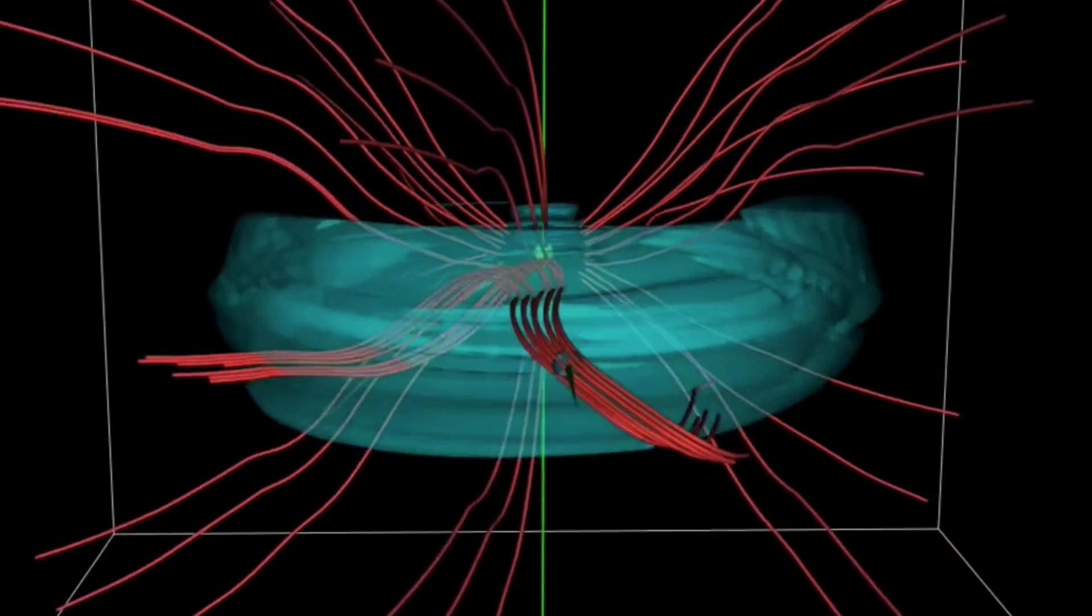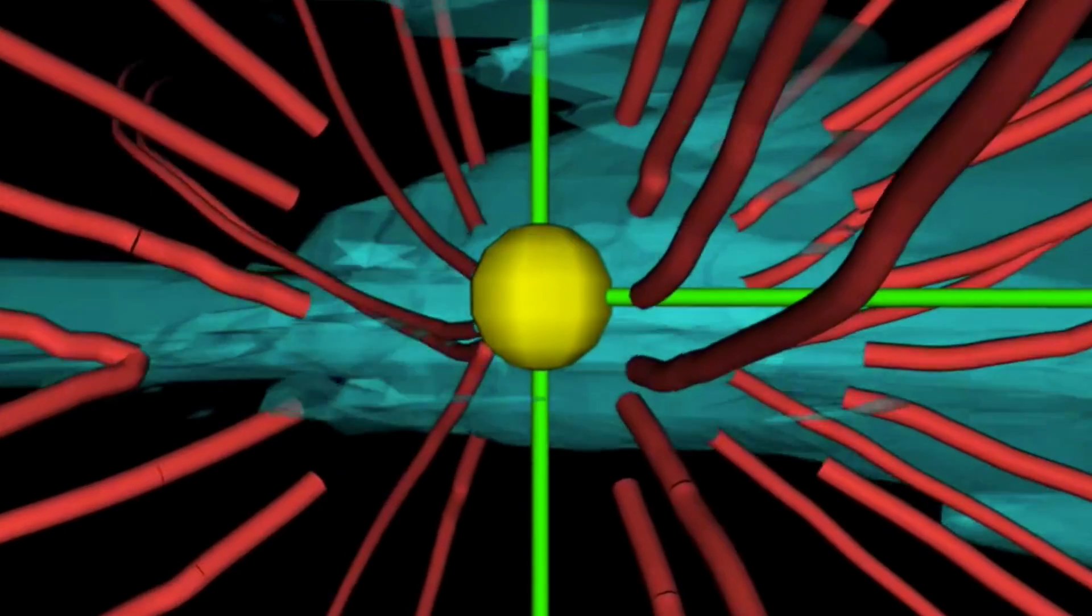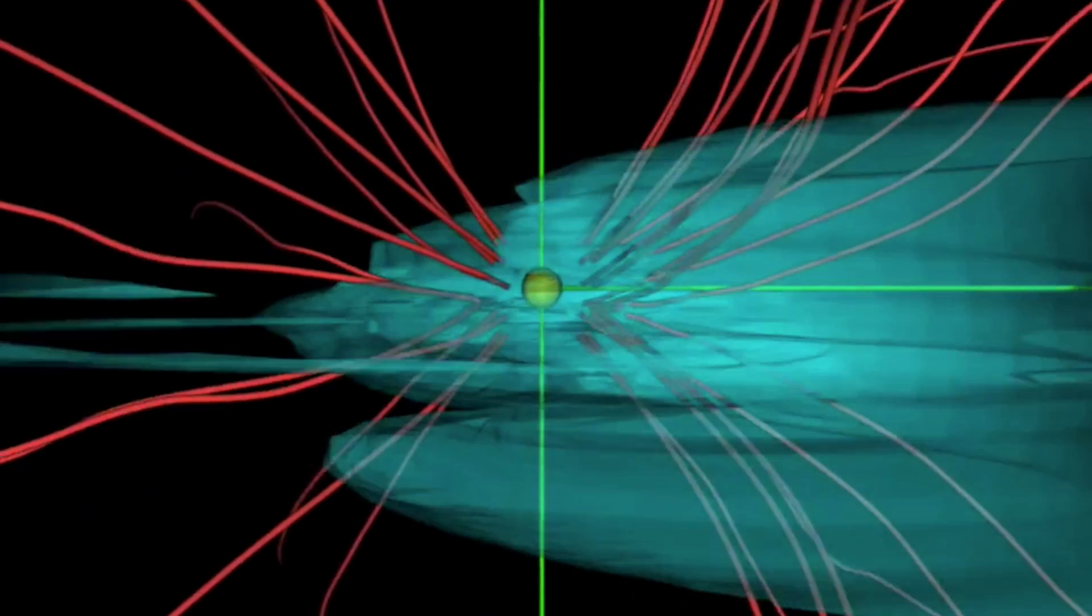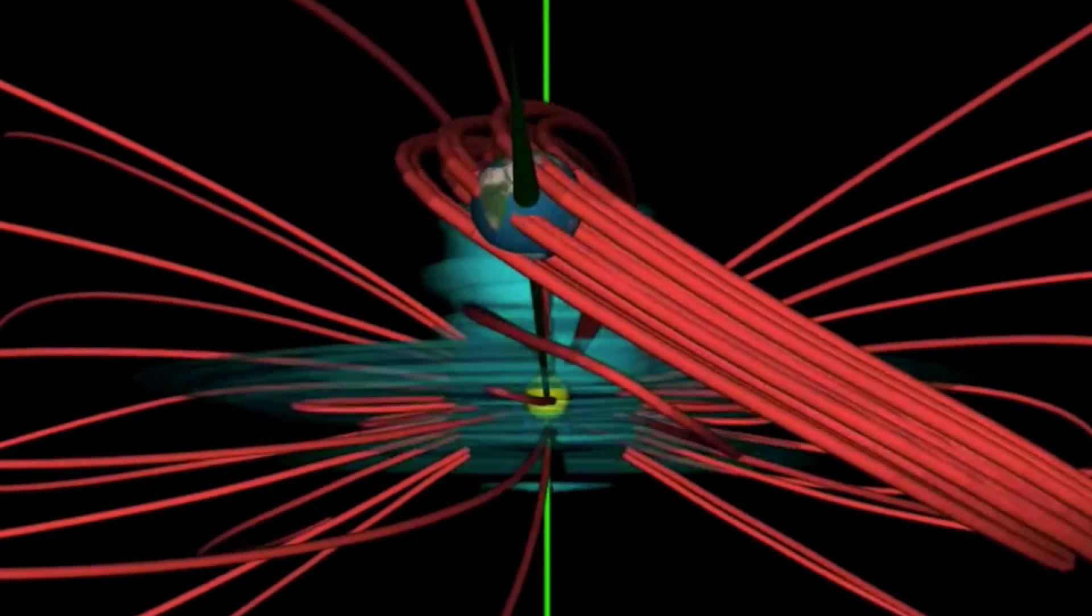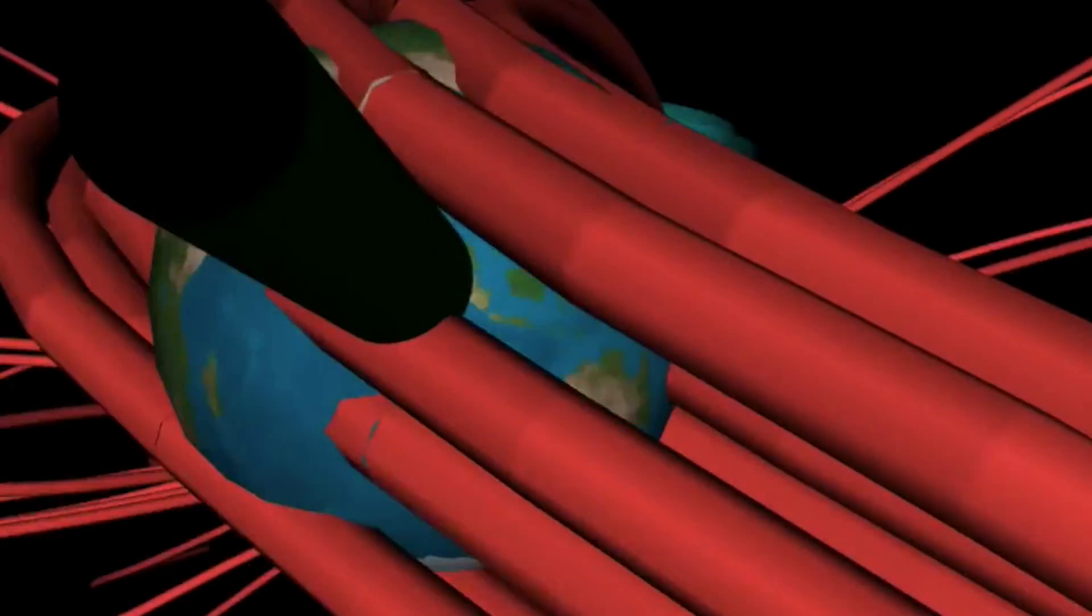Now the animation claims to be a CME impacting Earth's magnetosphere, but the full-scale ejection makes that a difficult concept to pair together. It's clearly not just a simple CME. It's showing what we've been discussing with the Earth field getting flipped by a solar micronova.